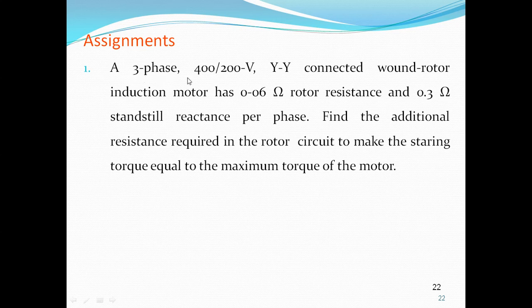Take this as an assignment for tomorrow. Problem 1: A three-phase 400/200 V star-star connected wound rotor induction motor has 0.06 ohms rotor resistance and 0.3 ohms standstill reactance per phase. Find the additional resistance required in the rotor circuit to make the starting torque equal to the maximum torque of the motor.